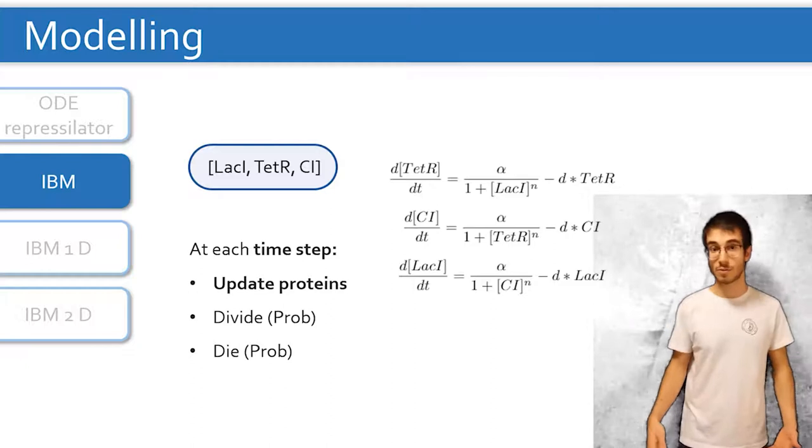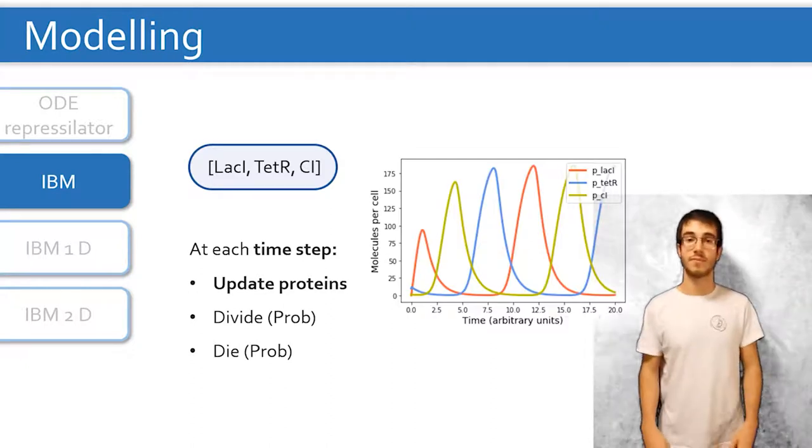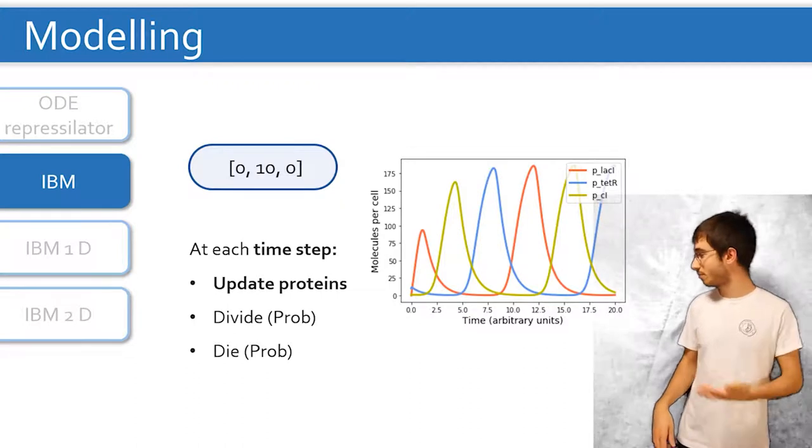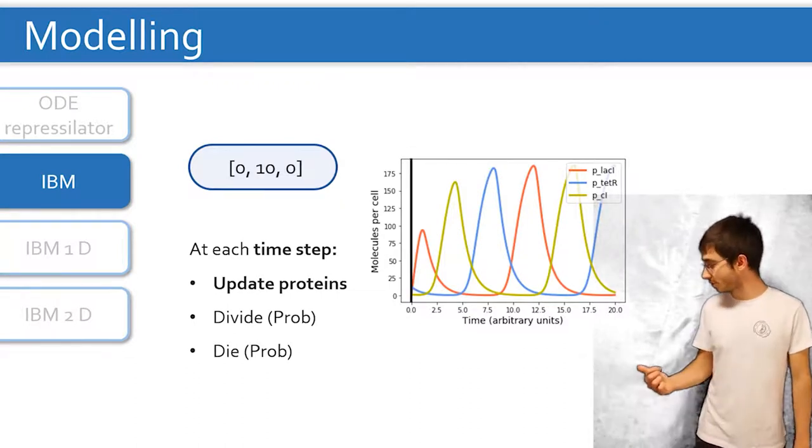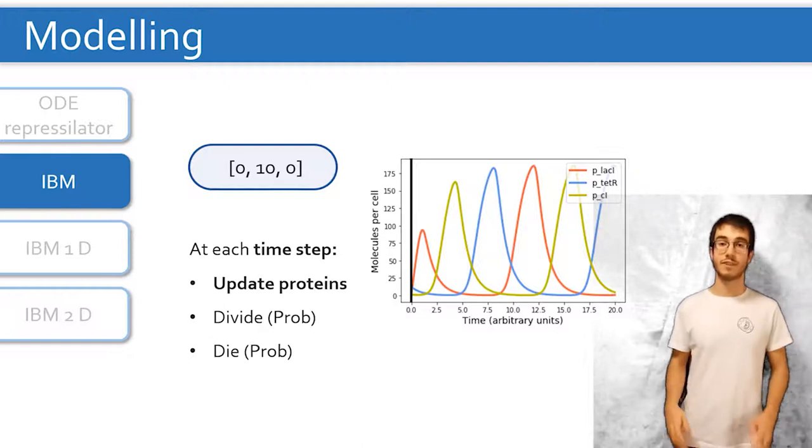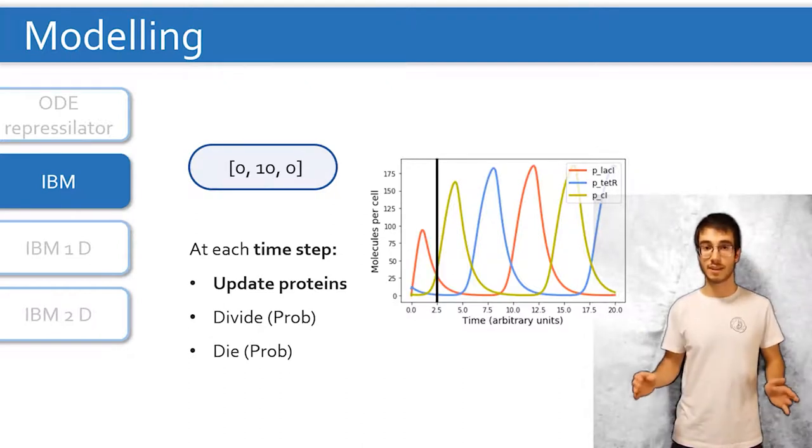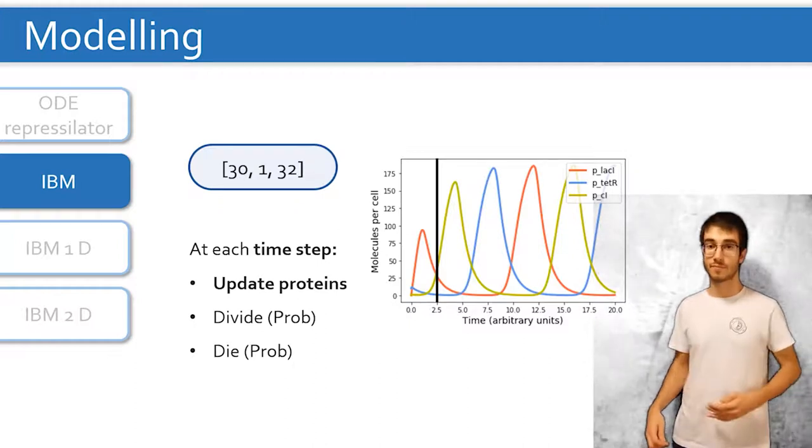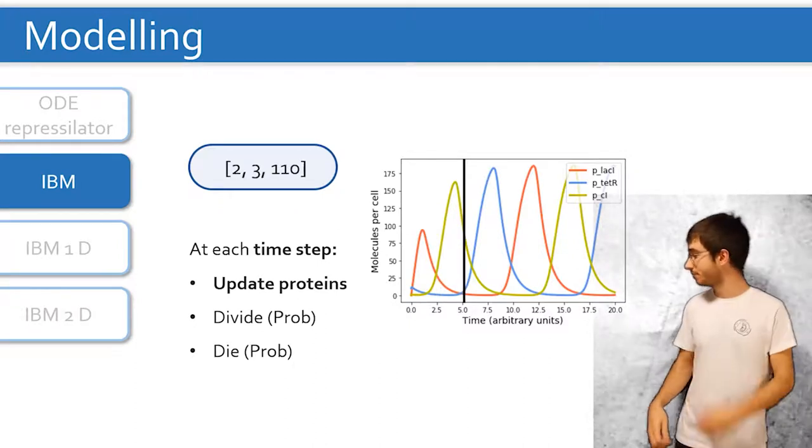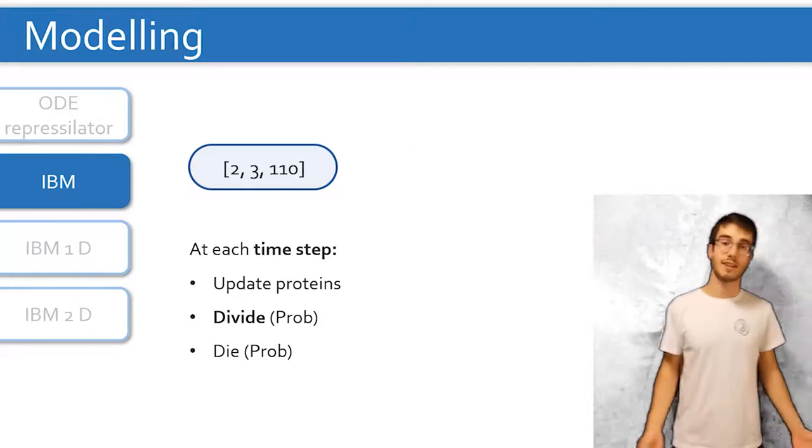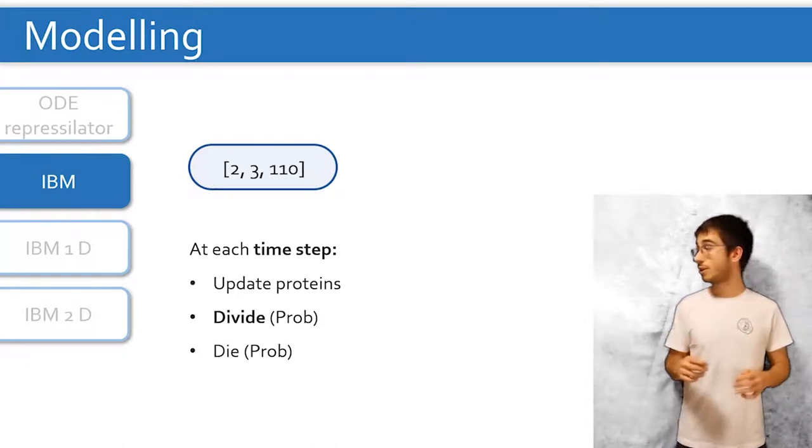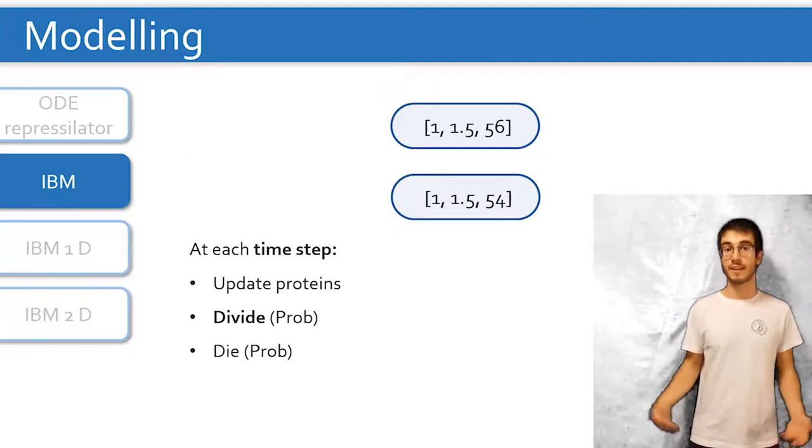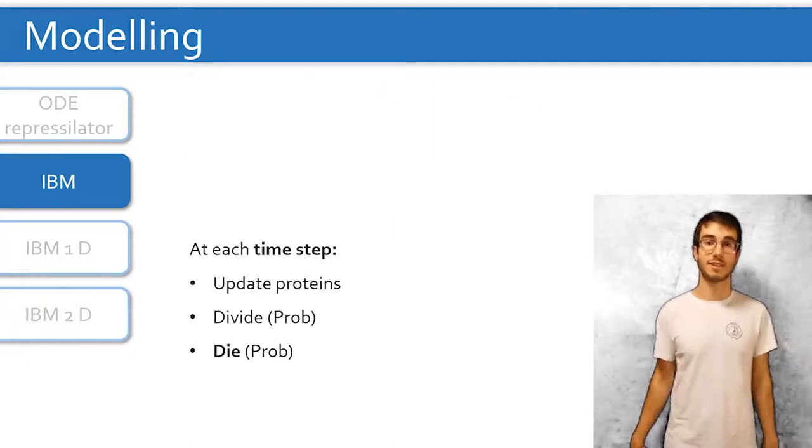If we integrate over time, we get something like this. Now let's say our bacterium starts with these protein values, that correspond to the initial conditions of the plot. So from there we can integrate for a set time and get new values that we update into the bacteria. We integrate and update. Imagine now our bacterium is going to divide, so we have to split the proteins between the daughter cells. Finally, if bacteria die, we just erase them from the system.